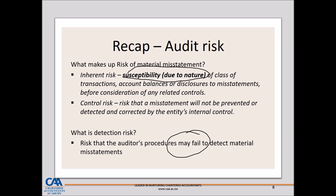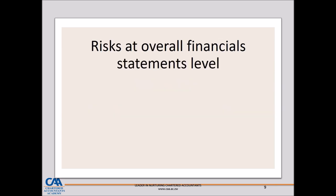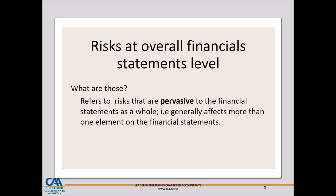Risk at the overall financial statement level — the key word is 'overall.' These are risks that are pervasive to the financial statements as a whole. What does pervasive mean? If that risk or misstatement is such that the auditor can conclude the financial statements are not fairly presented, that is pervasive — it affects more than one element of the financial statements. A combination of risks can result in a pervasive effect on the financial statements.